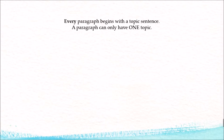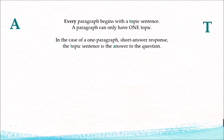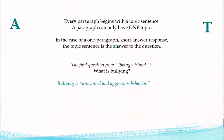Every paragraph has one topic — it can only have one topic. In the case of an OER or an SAR, that topic is the answer to the question. For example, in 'Taking a Stand,' you're given the question: what is bullying? And your answer — 'bullying is unwanted and aggressive behavior' — is an example of a topic sentence. This means everything in that paragraph can only be about bullying being unwanted and aggressive behavior. That's the topic sentence; it's the answer to the question.